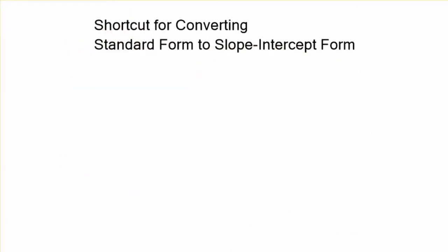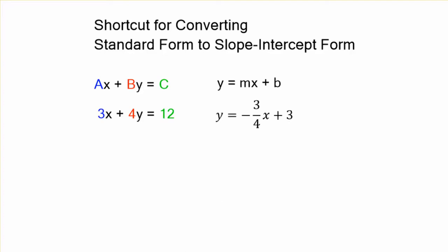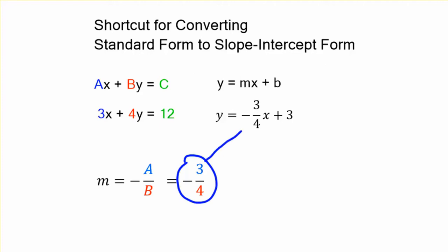This is just a quick shortcut for converting standard form of a linear equation to slope-intercept form. Standard form is ax plus by equals c, and slope-intercept is y equals mx plus b. For example, if you have 3x plus 4y equals 12, that's going to be the same as y equals negative 3 fourths x plus 3. The slope is going to be a over b, and then change the sign — so 3 over 4 becomes negative 3 over 4. Already done.